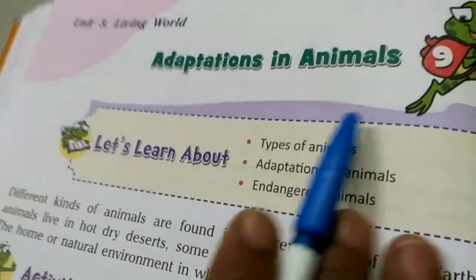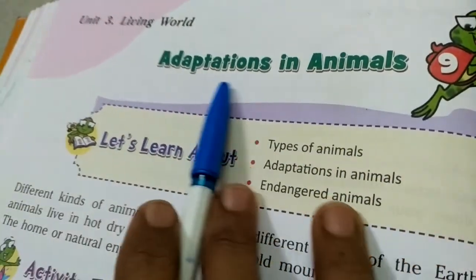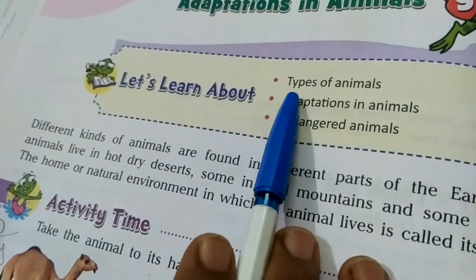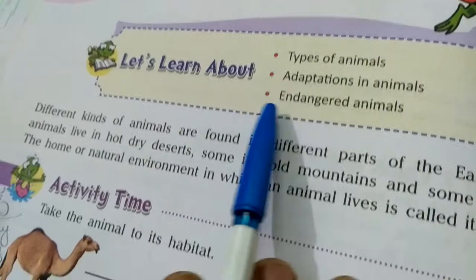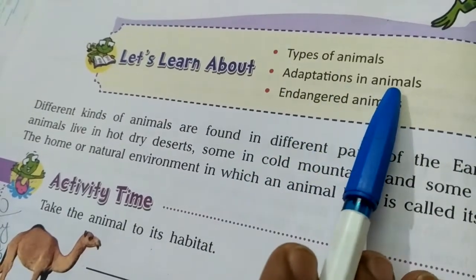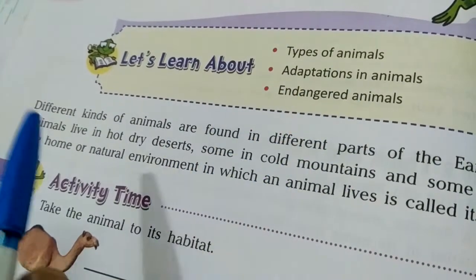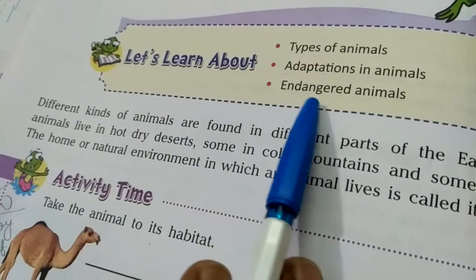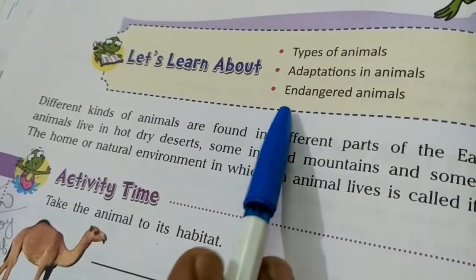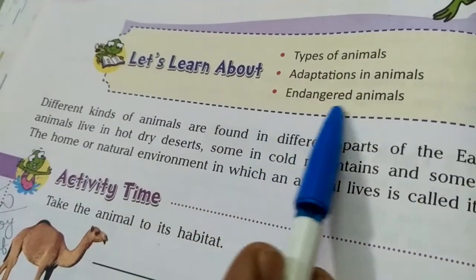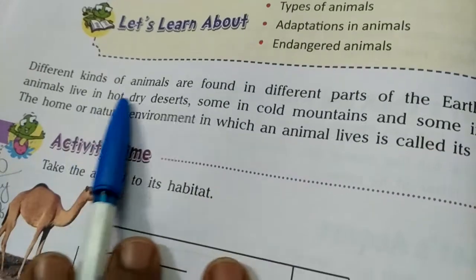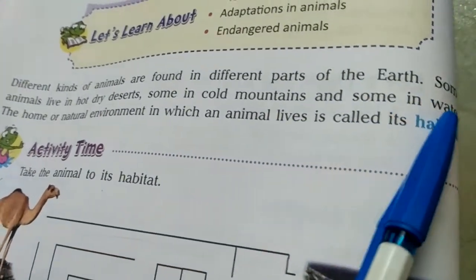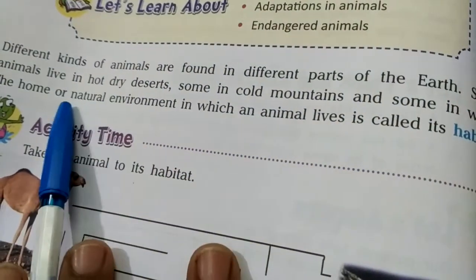This is a revision video of Chapter 9, that is 'Adaptations in Animals,' in which we have learned about types of animals, adaptations in animals, ways of their protection, feeding habits, habitats, and about endangered animals.